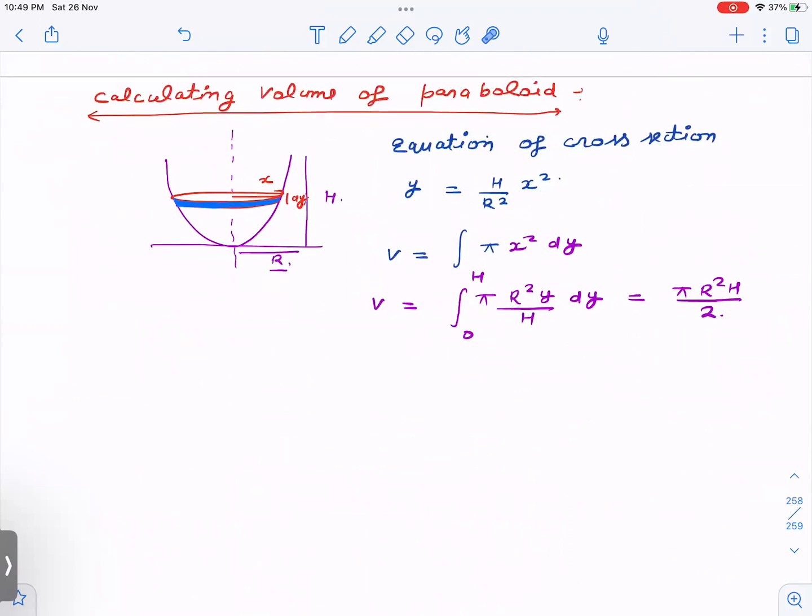Okay, so in last, as promised, I'm going to show you the volume of paraboloid also. So this is a paraboloid here. This is the equation of cross section Y equal to aX square. And then find the value of a by putting X equal to R and Y equal to H, you're going to get this equation. Radius is R and height is H. Then to find out the volume, we can divide this into disks. So volume of the disk is pi X square into dY. And Y now, X square we can substitute here, integrate from 0 to H, you're going to get pi R square H by 2.